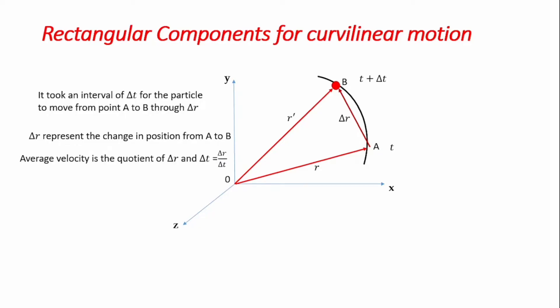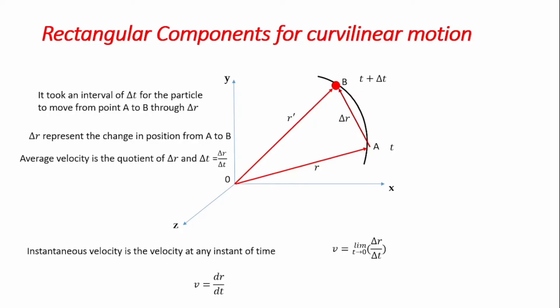The average velocity is the quotient of the change in position from A to B and the change in time — the ratio of Δr and Δt. What concerns us is the instantaneous velocity, which is the velocity at any instant of time. That velocity is given by the limiting value of the average velocity — the limiting value of Δr/Δt as Δt tends towards zero. So the instantaneous velocity is the time derivative of the position vector: v = ṙ.